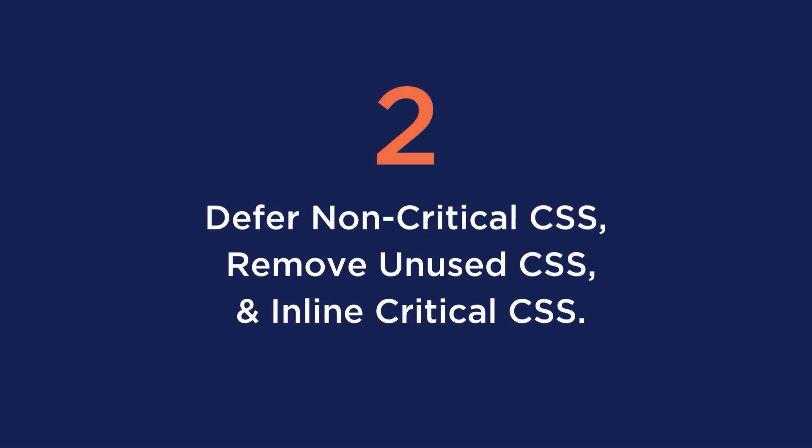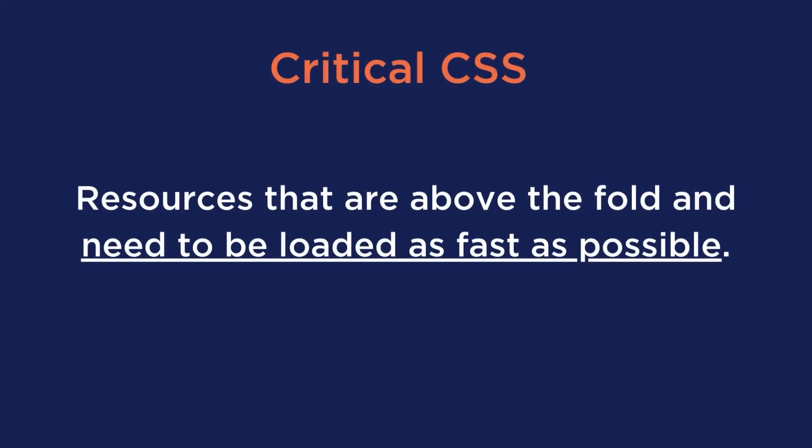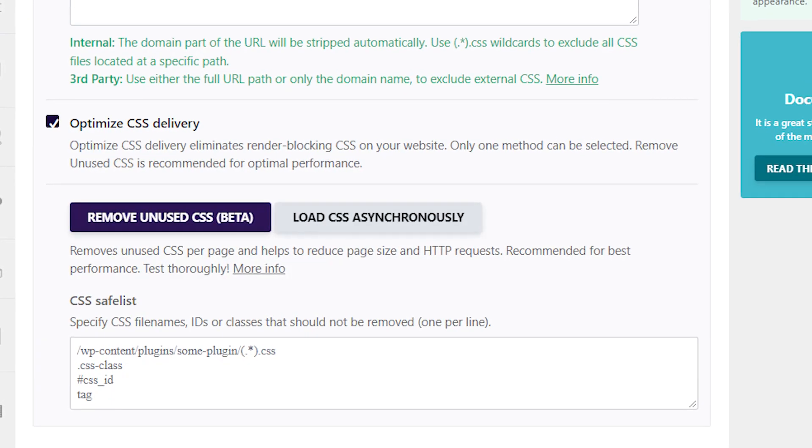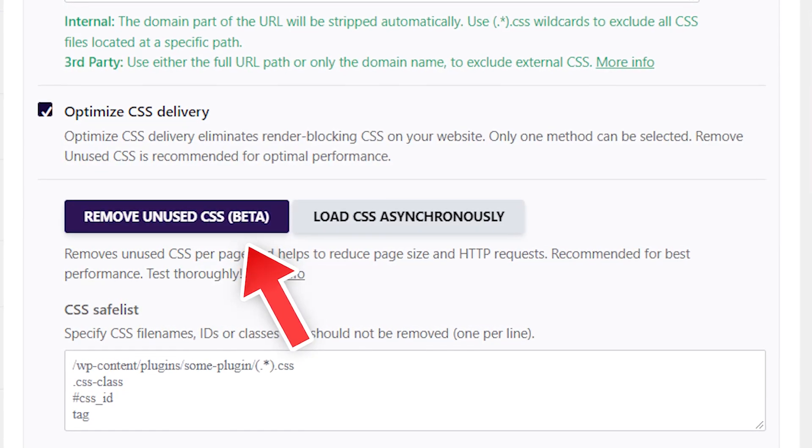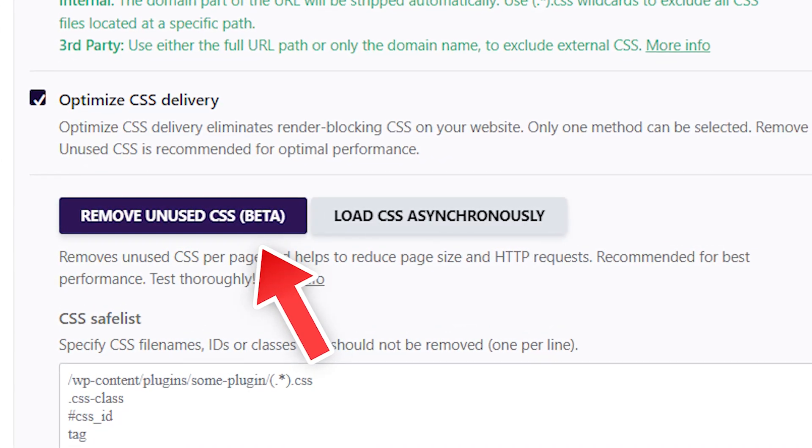Tip number two is to defer non-critical CSS, remove unused CSS, and inline critical CSS. Non-critical CSS is not relevant for rendering the page, and these files will generate PageSpeed Insights recommendations such as eliminate render-blocking resources and avoid chaining critical requests. Critical CSS, on the other hand, should have the highest priority — these are the resources above the fold that need to load as fast as possible. Even though these are advanced tips, they can easily be fixed with just a few clicks. In our plugin WP Rocket with the new 3.11 update, we recommend using the Remove Unused CSS option as the method for CSS optimization.